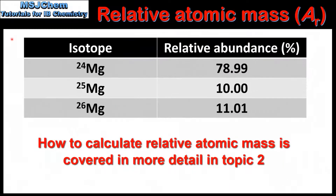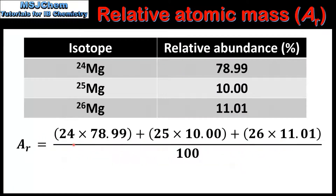Next we look at how to calculate the Relative Atomic Mass of an element. In this table we have the three naturally occurring isotopes of magnesium: magnesium-24, magnesium-25, and magnesium-26. In the second column we have their relative abundances. We'll use these values to calculate the Relative Atomic Mass of magnesium. To do this we multiply the mass of each isotope by its relative abundance.